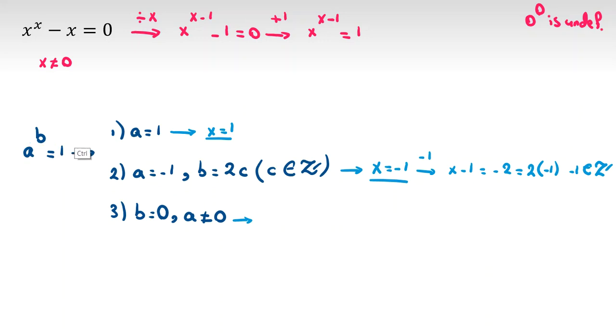Let's check third case. Power is zero but the base is not zero. Power is x minus one, x minus one is zero. So if you add one to both sides x will be one and it is not zero.